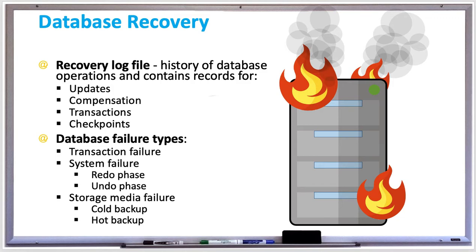System failure is when data blocks are stored on media storage and periodically written to hard disk or other storage media, which are safe in the case of a system failure. If the system's main memory is lost before a block gets written to storage, the recovery system can recover committed transactions and roll back uncommitted transactions from storage.